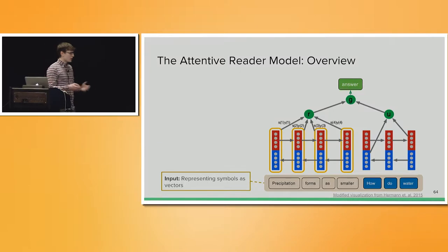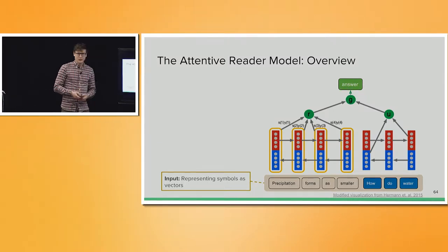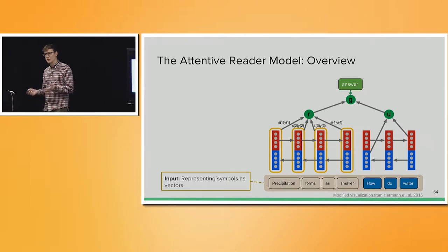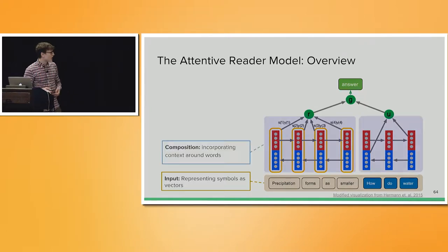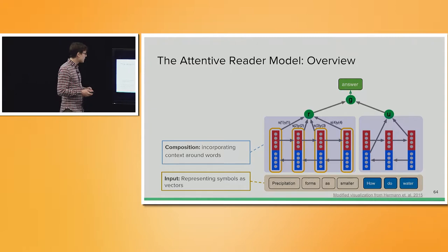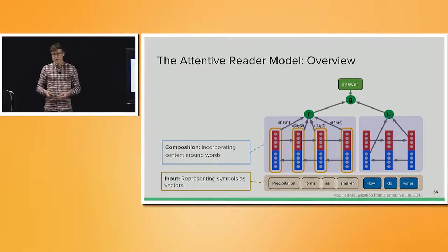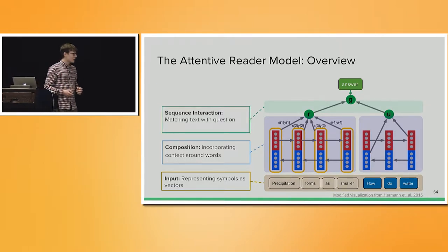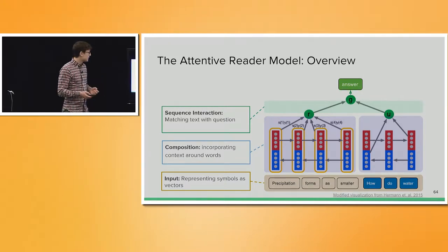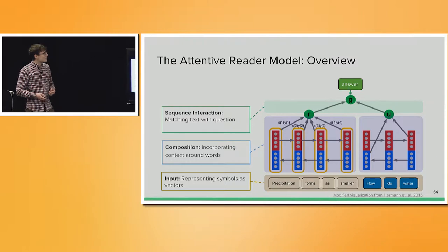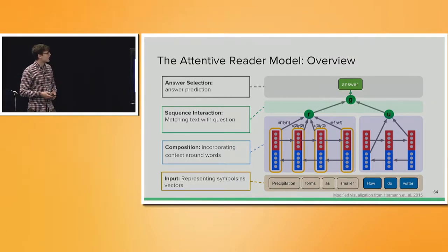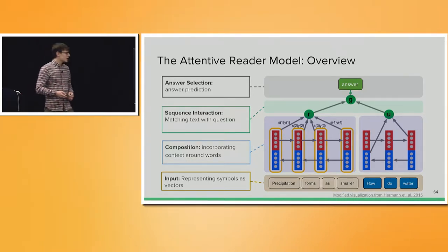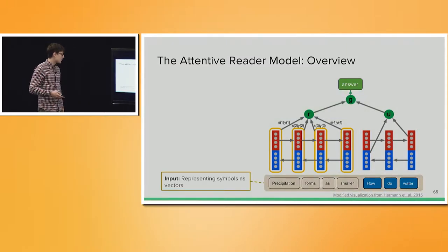This model architecture looks a bit daunting, so I want to decompose it into several higher-level components. In the beginning, we have to talk about the input representation — their symbols and characters. However, neural networks work with vectors, so how can we reconcile that? After that, I'll talk about how we can put these words into context of one another. After we've done that for both the question and the paragraph, we want some kind of matching to happen, and ultimately we bring all of that together in an answer selection process.